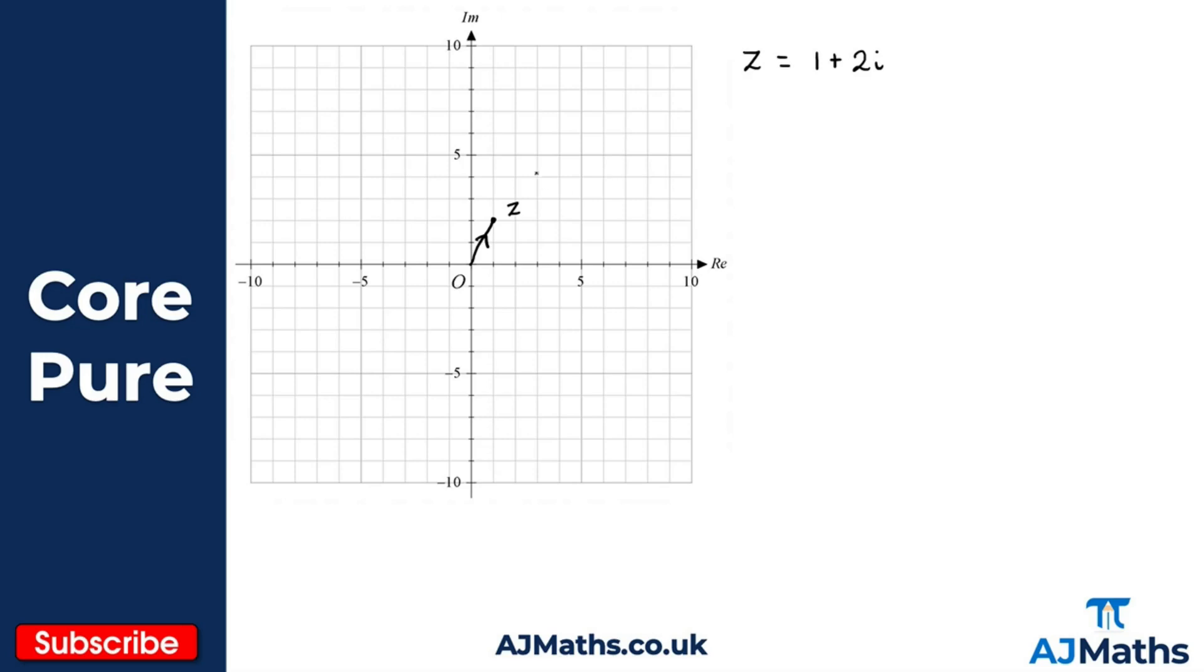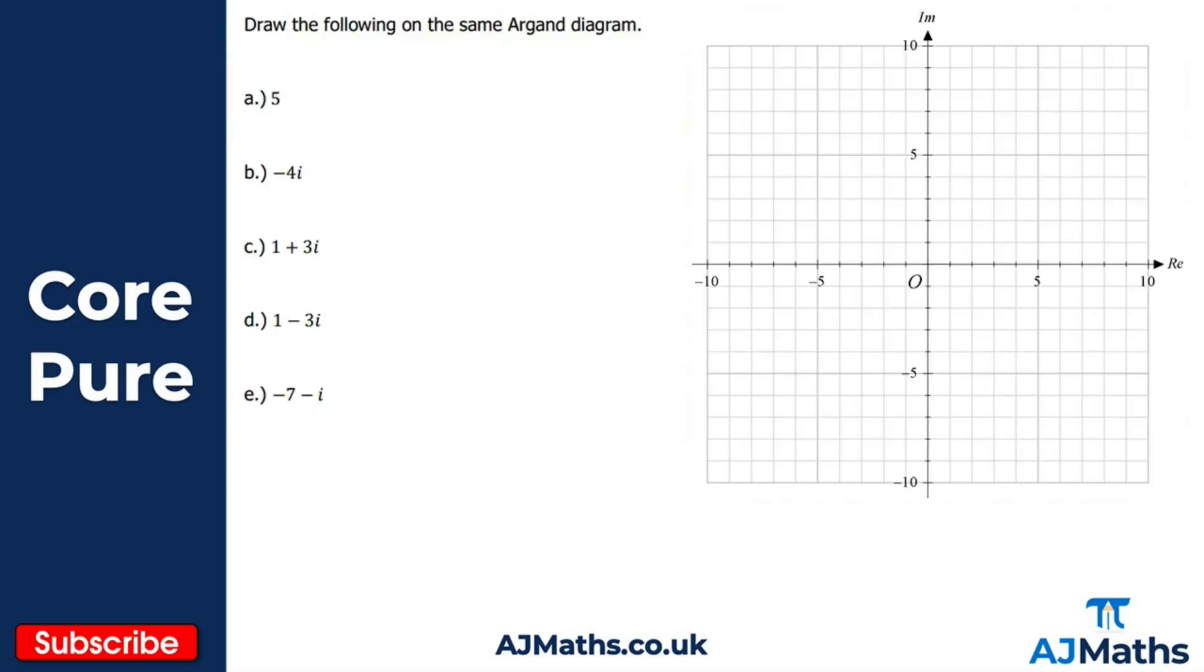We do have four quadrants here: quadrant one, two, three, and four, again just like we used to with our Cartesian coordinate system. Let's have a look now at plotting a few points on an Argand diagram. We want to draw the following on the same Argand diagram, so we've got five parts, a through to e.